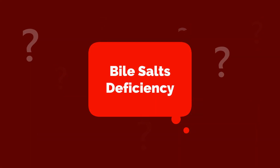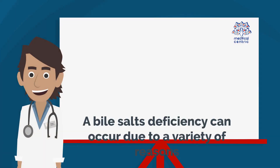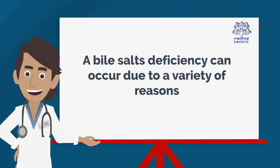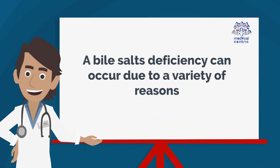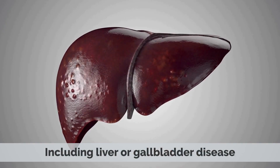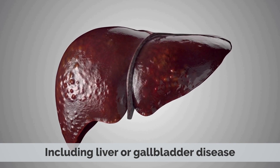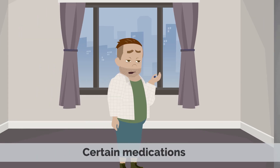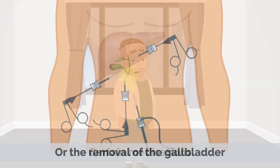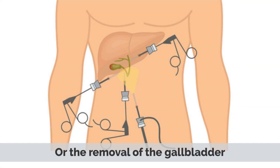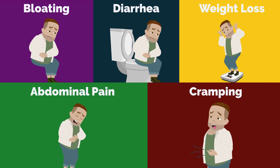A bile salts deficiency can occur due to a variety of reasons, including liver or gallbladder disease, certain medications, or the removal of the gallbladder. Symptoms of a bile salts deficiency can include bloating, diarrhea, weight loss, abdominal pain, and cramping.